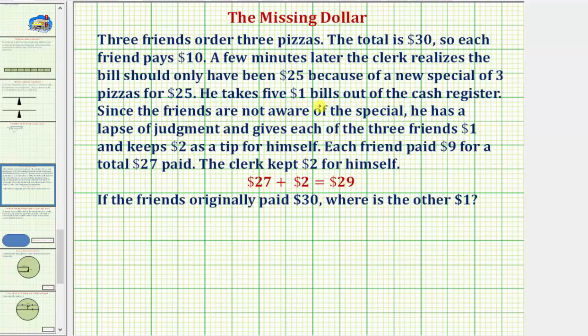He takes five $1 bills out of the cash register. Since the friends are not aware of the special, he has a lapse of judgment and gives each of the three friends $1 and keeps $2 as a tip for himself. So each friend paid $9 for a total of $27 and the clerk kept $2 for himself.